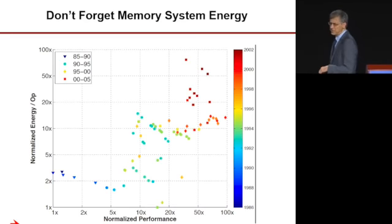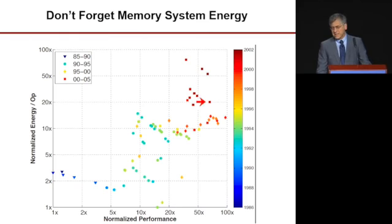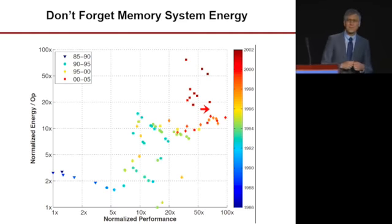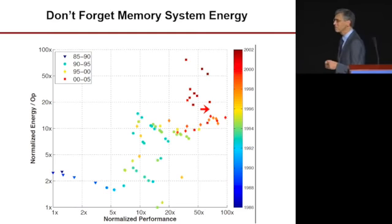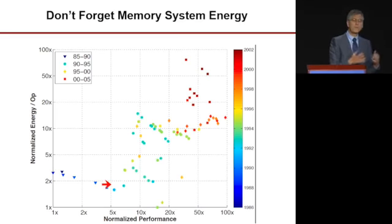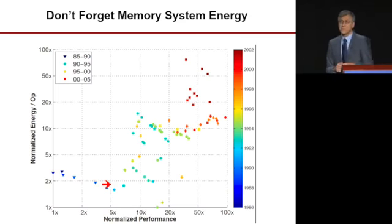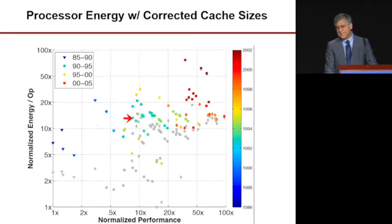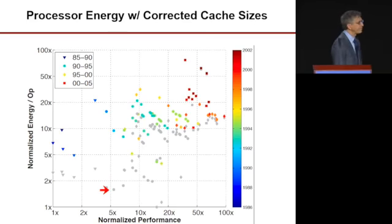Going back to the CPU database plot — what bothered us was that older processors appeared more energy efficient than newer ones, which didn't make sense since designers have been learning better ways to make things efficient. We realized we made a big mistake: we forgot to include a memory system for those older processors. When we add the memory system needed to run at a gigahertz — with appropriate caches — we were surprised to see the memory system energy was larger than the processor core energy, by factors of two or more.